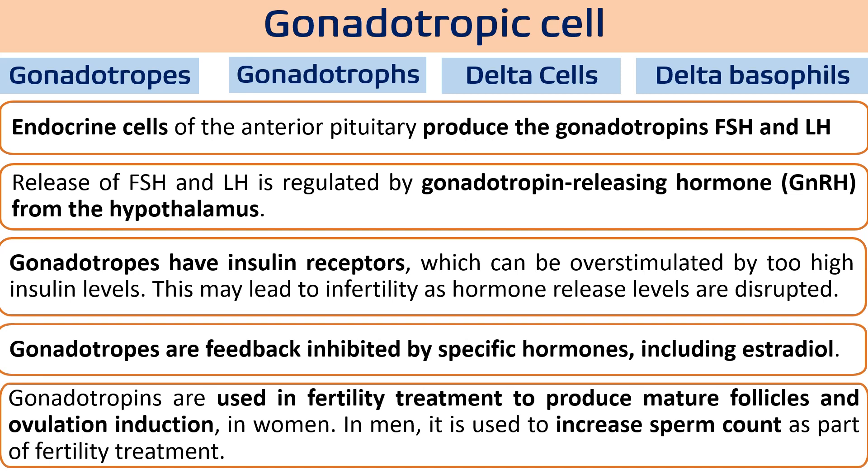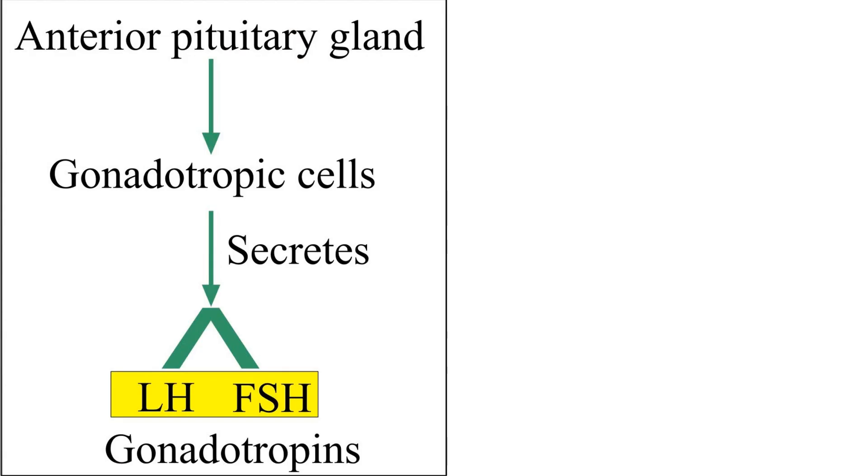These gonadotropins, FSH and LH, are also used for fertility treatments. FSH used in females helps produce mature follicles and egg cells, or induces the ovulation process. When used in males, it increases sperm count or viable sperm counts. They are used during IVF or in vitro fertilization procedures.